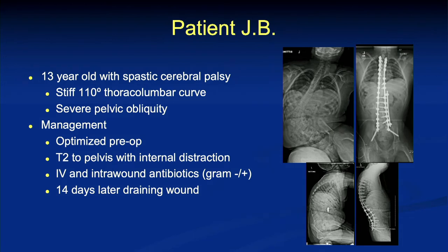Here's a child that my fellow Bilal and I did a couple of weeks ago — 13 years old, spastic cerebral palsy, pretty stiff, large curvature, severe pelvic obliquity. We had the patient optimized preoperatively and used internal distraction to help level the pelvis. We gave him all the different antibiotics we've learned we need to give, and sure enough, 14 days later — draining wound. Very frustrating. A lot of work, long day, a lot of resources, and now we're dealing with an infection we'll probably be managing for some time.